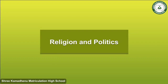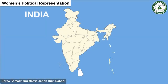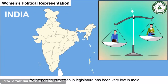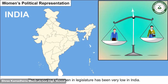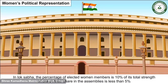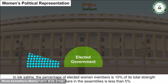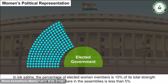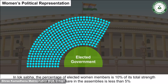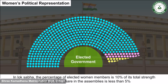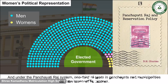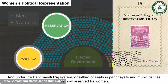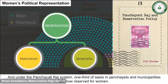Women's Political Representation: The proportion of women in the legislature has been very low in India. In Lok Sabha, the percentage of elected women members is 10% of its total strength, whereas their share in the state assemblies is less than 5%. Under the Panchayati Raj system, one third of seats in Panchayats and municipalities are now reserved for women.